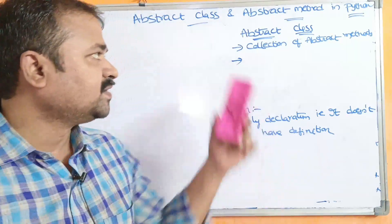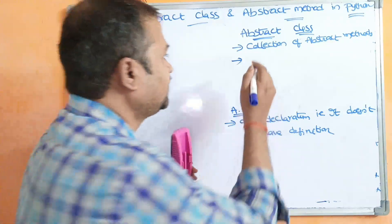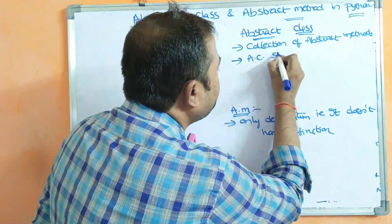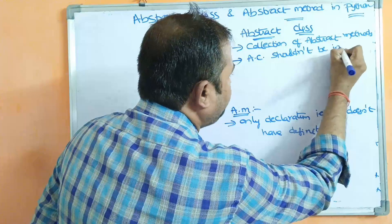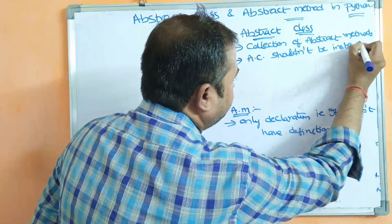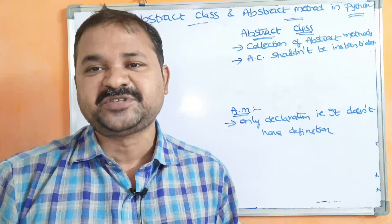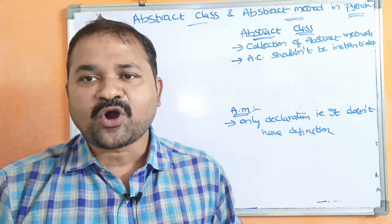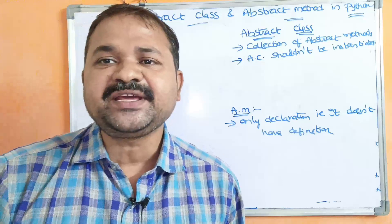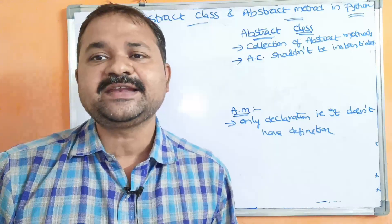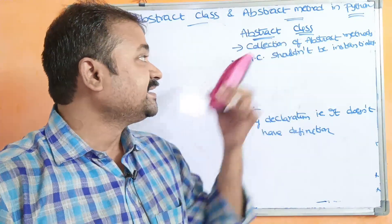An abstract class should not be instantiated. Instantiation means the process of creating an object. So it is not possible to create an object for the abstract class. If we try to create an object for the abstract class, then an error message will be generated.